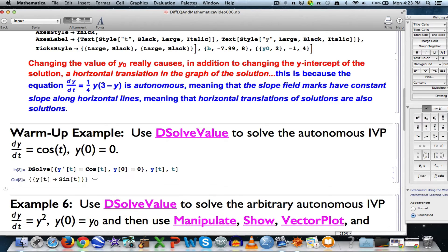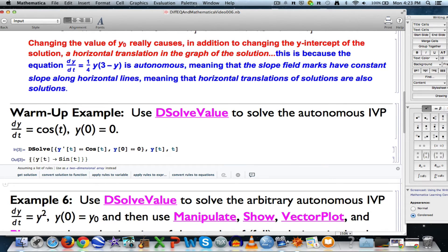This produces the answer sine of t. Though the output is in kind of a strange form, that's what's called a rule in Mathematica when you see an arrow like this. It's also inside curly braces. You might be saying, why doesn't it just say sine of t? That is, after all, the answer.